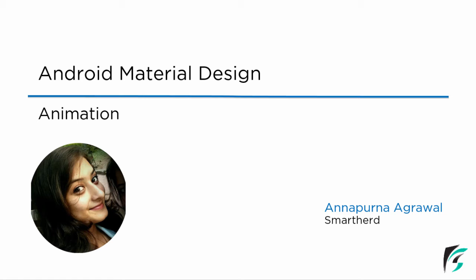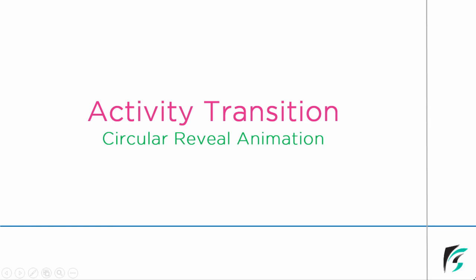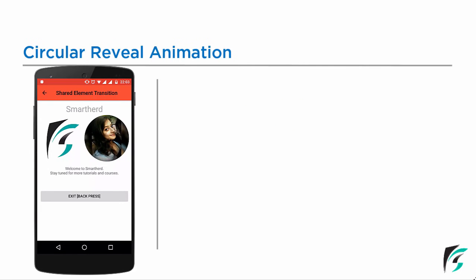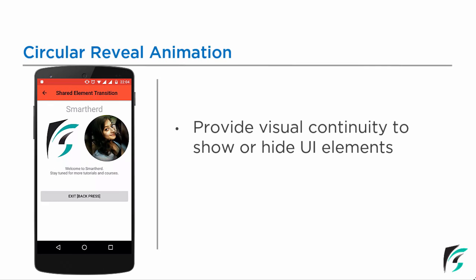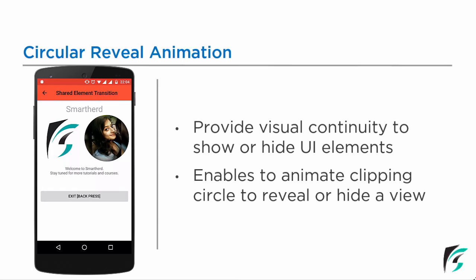In the last video, we had studied about the shared element transition. In this video, we will be learning about activity transition related to circular reveal animation. Let's proceed with what circular reveal animation is. Circular reveal animation provides visual continuity to show or hide UI elements. It enables you to animate a clipping circle to reveal or hide a view.